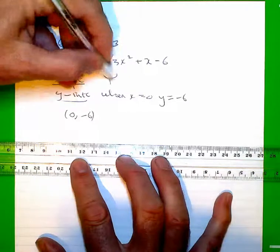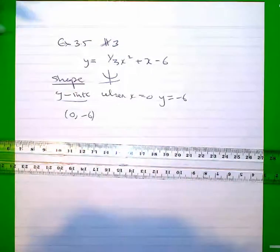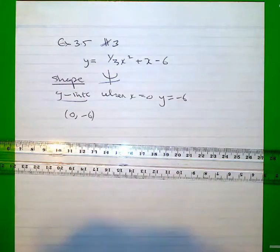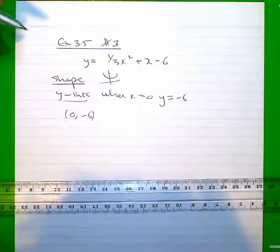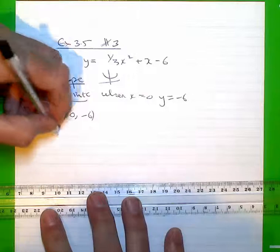The shape is going to take the normal quadratic type shape, smiley face if you like. Now, we need a turning point, and we also need to locate the intercepts. I'll do the X-intercepts first.